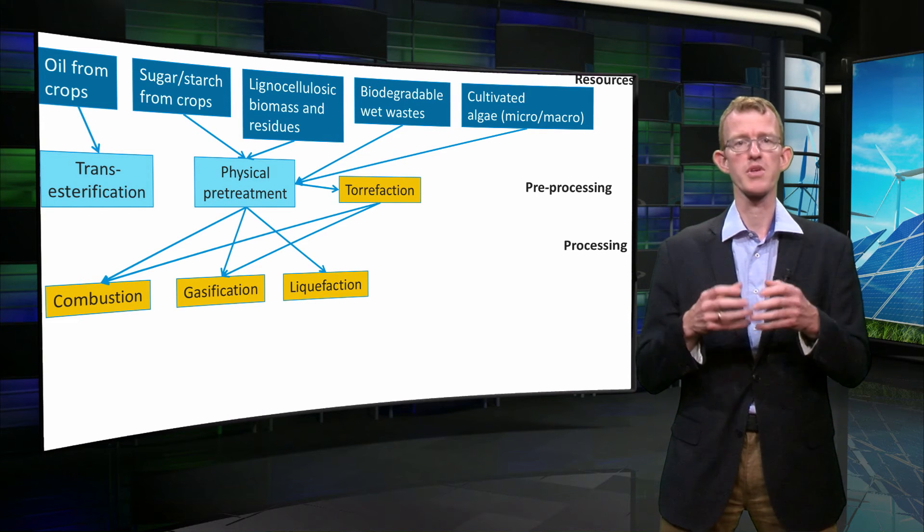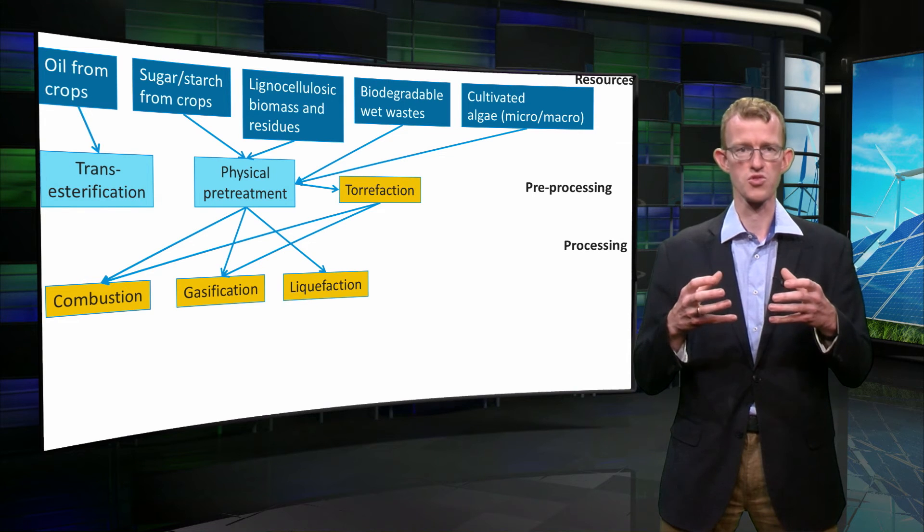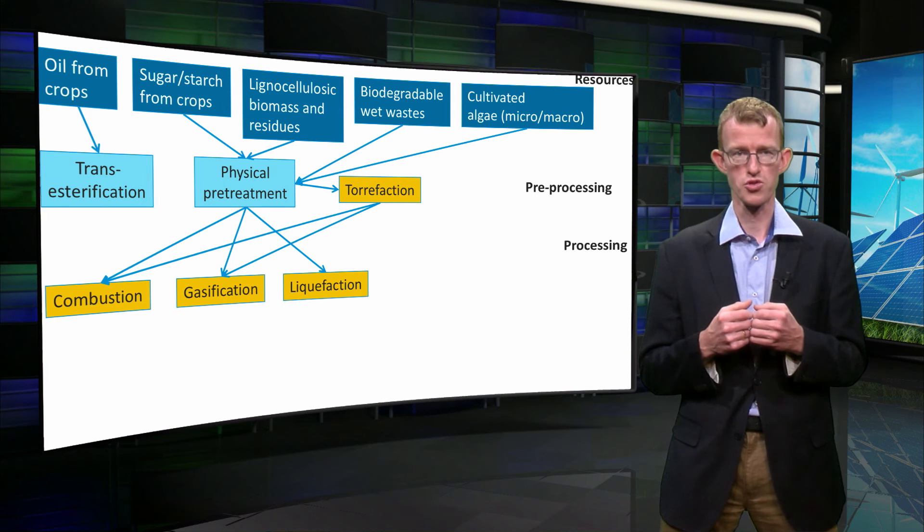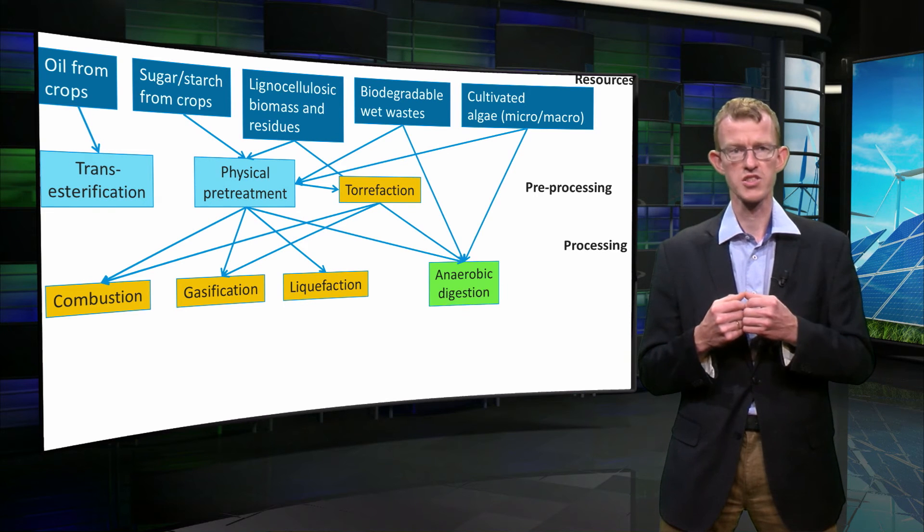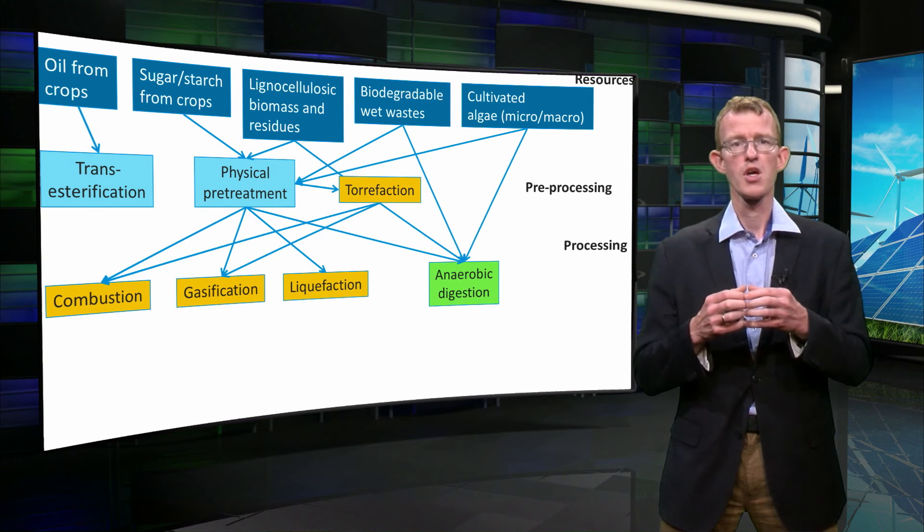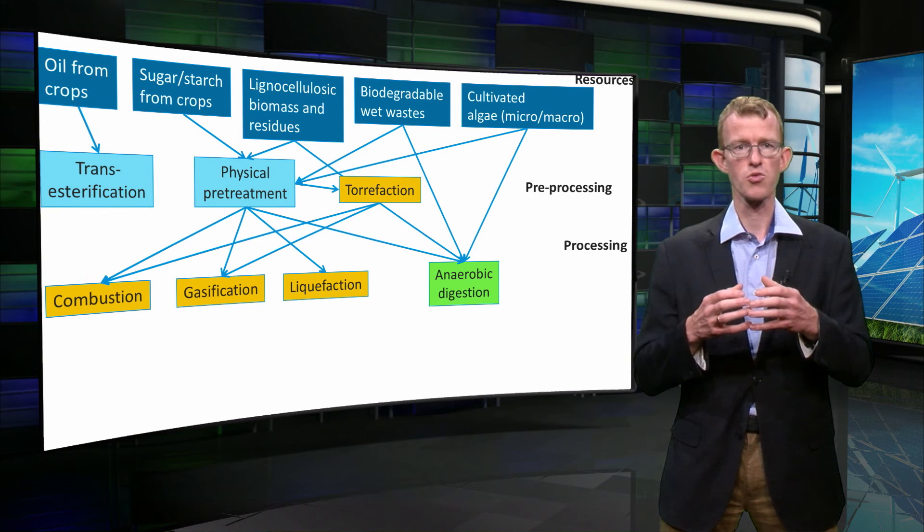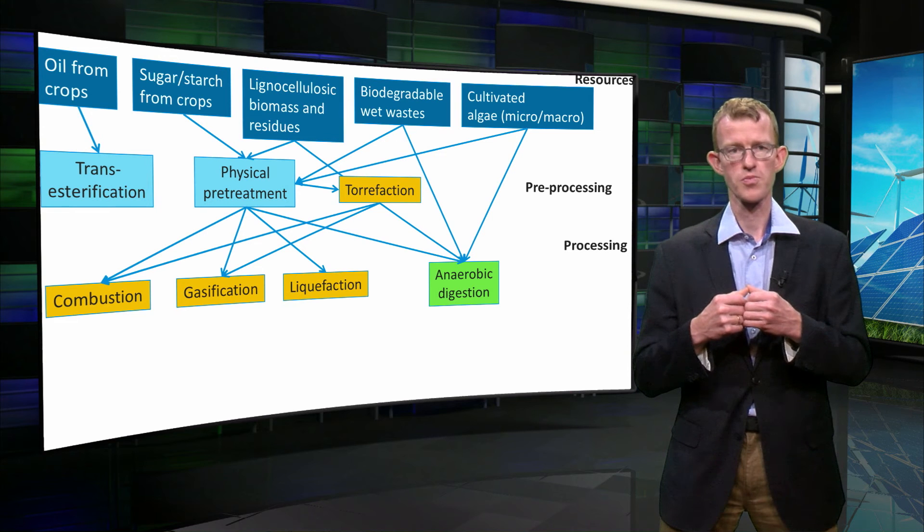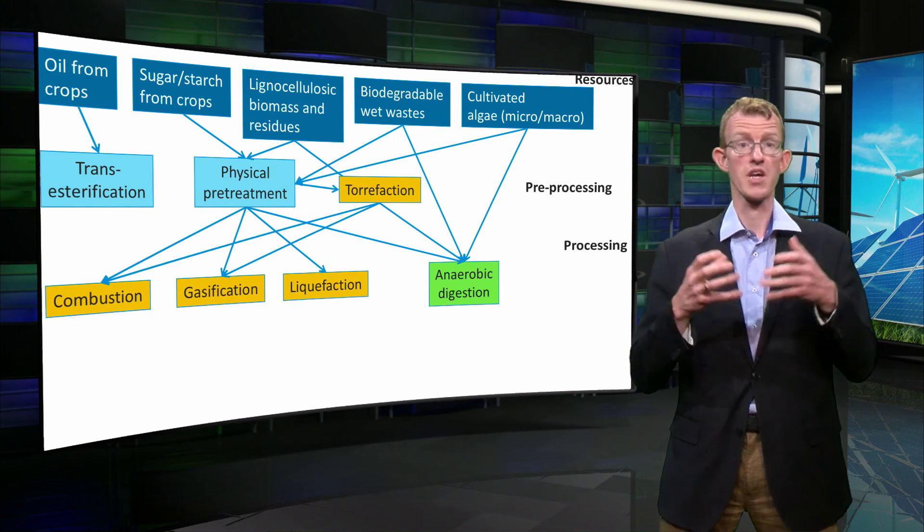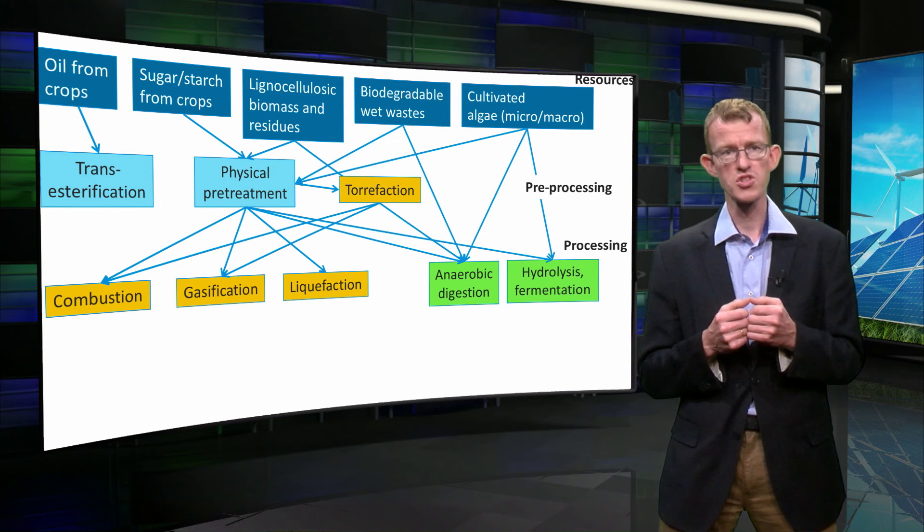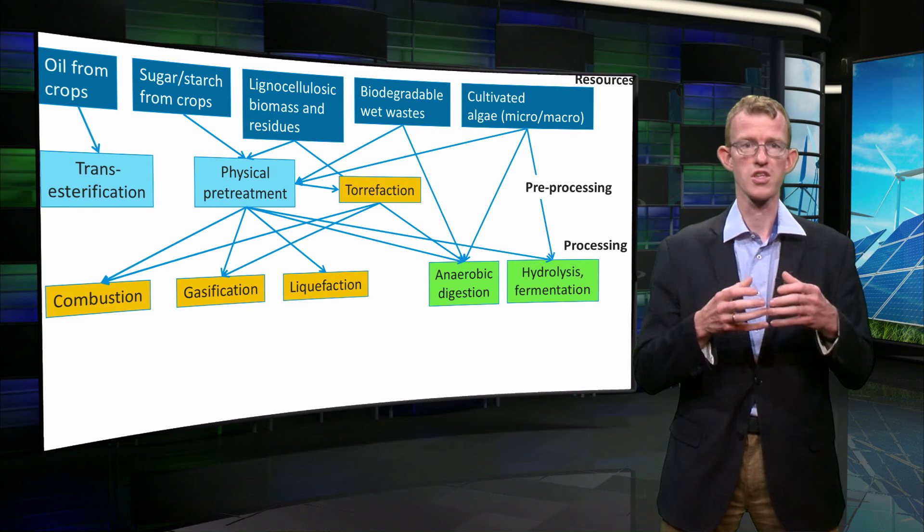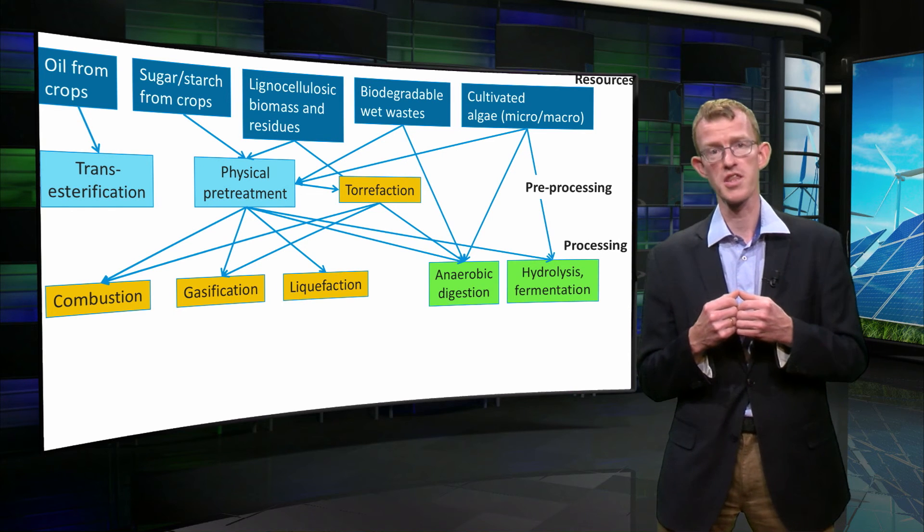The second category, biochemical treatment, is carried out using biological reactions. This involves living organisms, so therefore it can only be done at mild temperatures. Anaerobic digestion is the conversion of biomass into biogas, which has a comparable composition as natural gas, with methane as its main component. This runs without oxygen; anaerobic literally means without air. Another technology is hydrolysis followed by fermentation to convert starch and sugar into liquid fuels such as ethanol.